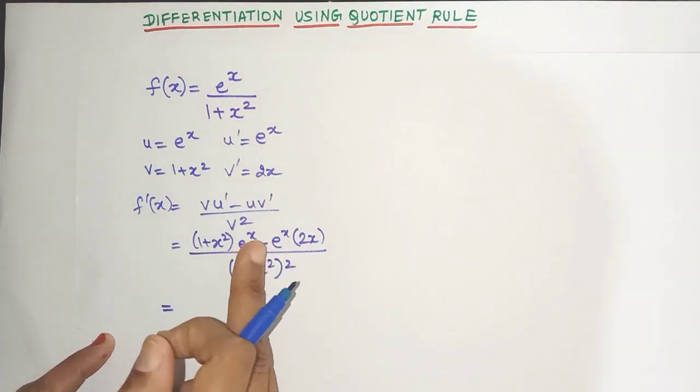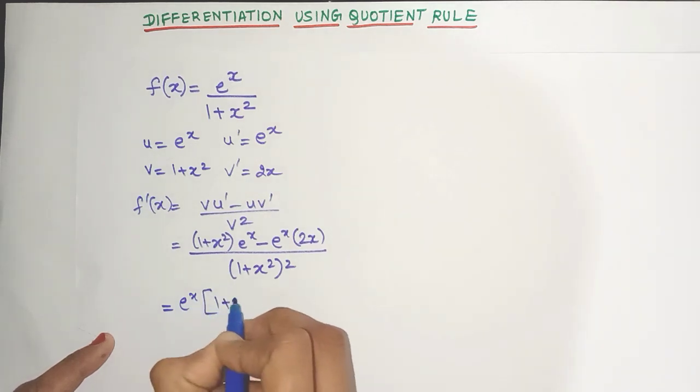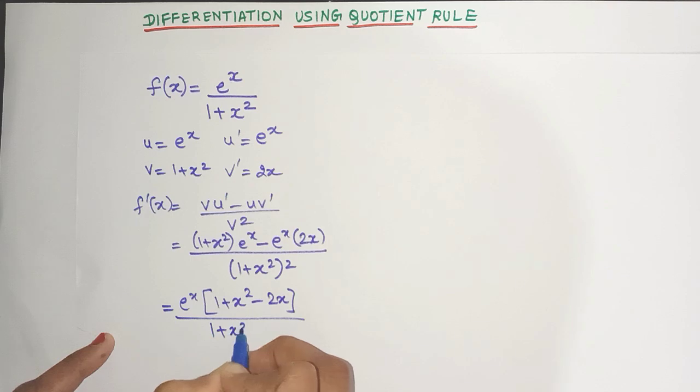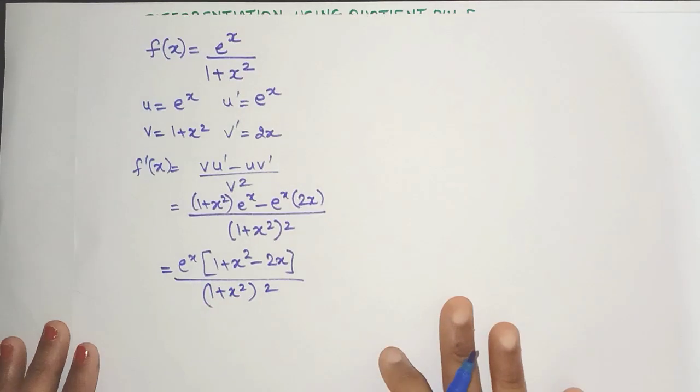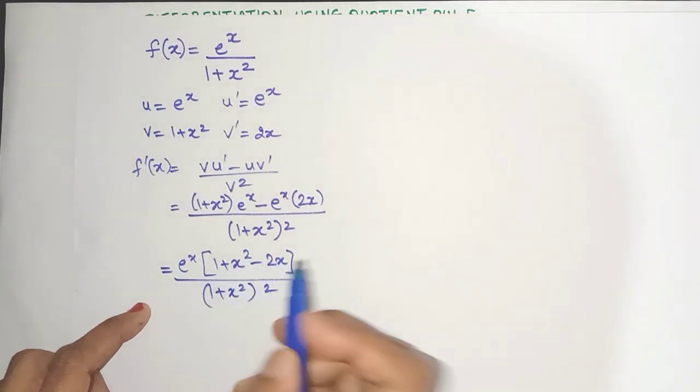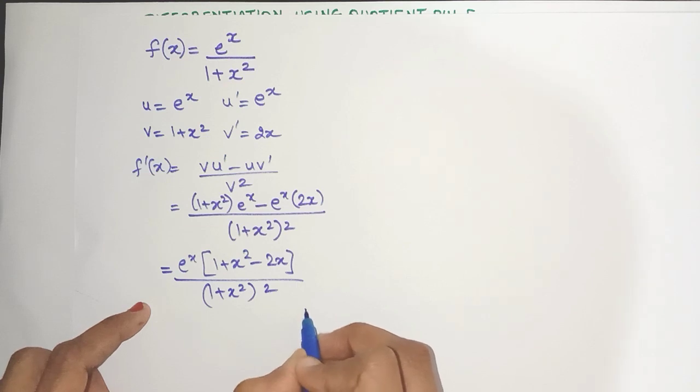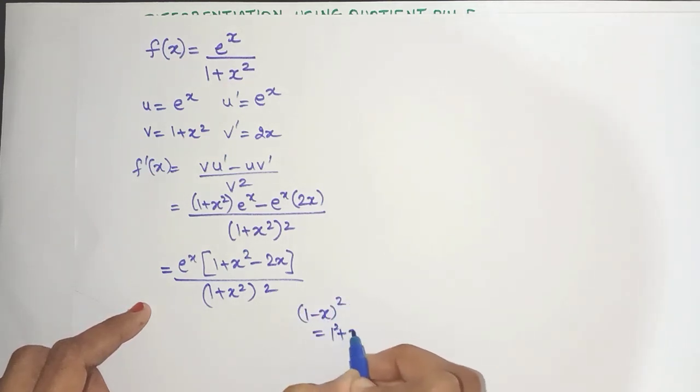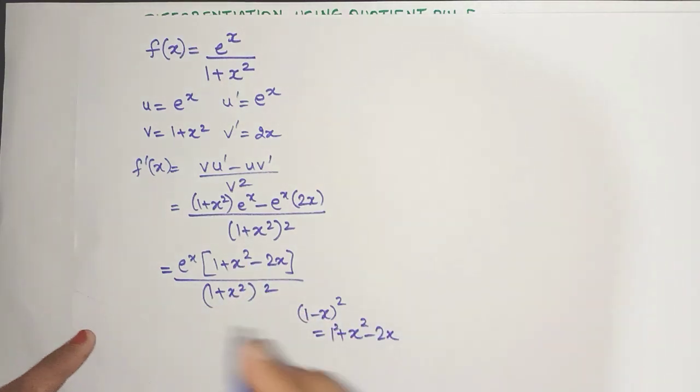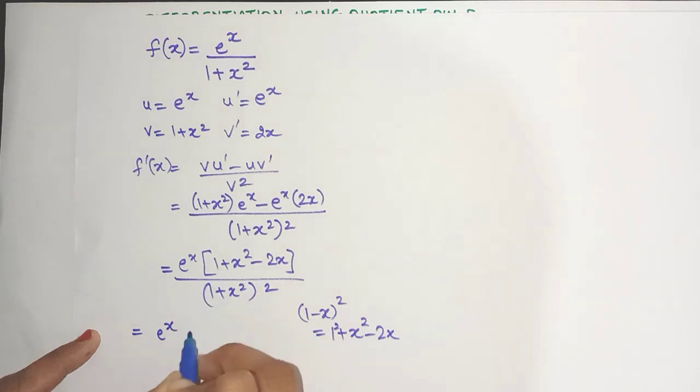So I can see e to the power of x common in both the terms. So let's bring it out like this minus 2x divided by just keep the denominator as it is friends. Now did you see that this looks very similar to the identity 1 minus x the whole square. Just have a look. 1 square plus x square minus 2x. Yes. It's exactly the same.